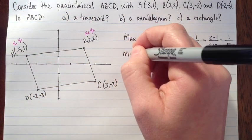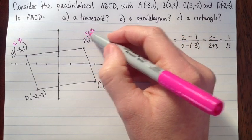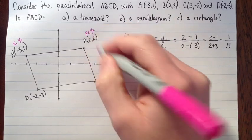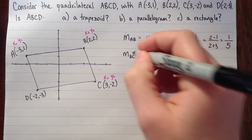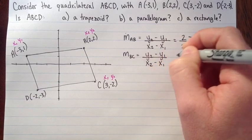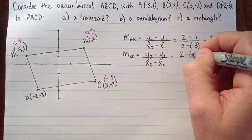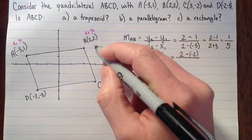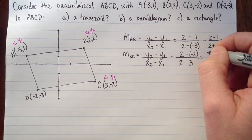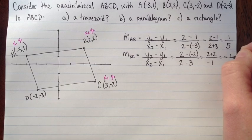Next we'll find the slope of BC. I'll call this one x1, y1, and that will save me having to scribble things out. The slope is y2 minus y1 over x2 minus x1. So we've got 2 minus negative 2 over 2 minus 3. That's 2 plus 2 over 2 minus 3 is negative 1. So that's 4 over negative 1, which is negative 4.